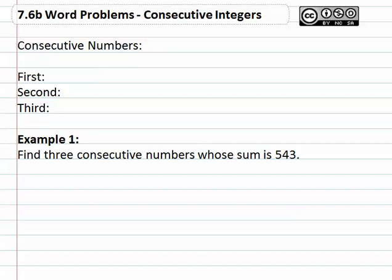In this video we're going to investigate what are called consecutive numbers. Consecutive numbers are numbers that are basically in order. For example, you might consider the consecutive numbers five, six, seven, eight, those are consecutive numbers.